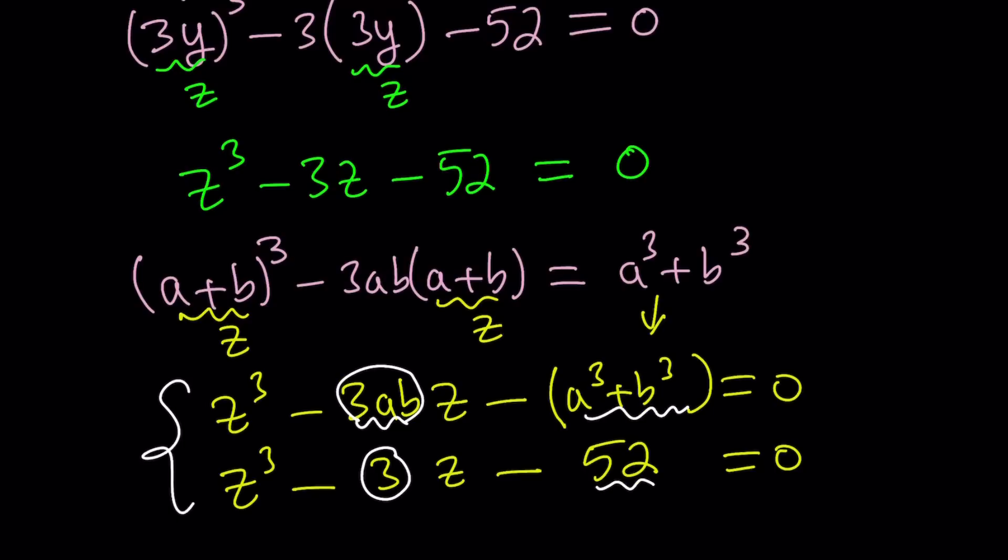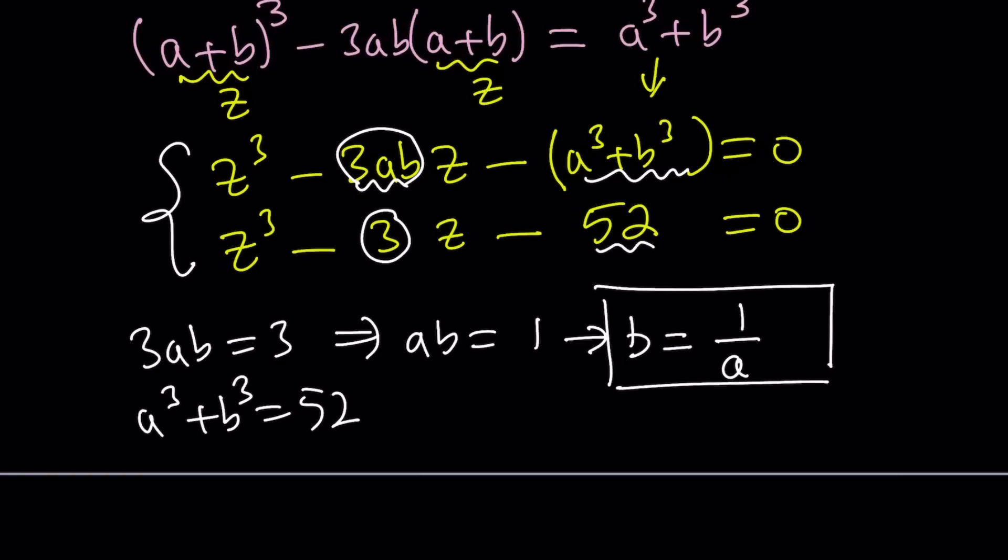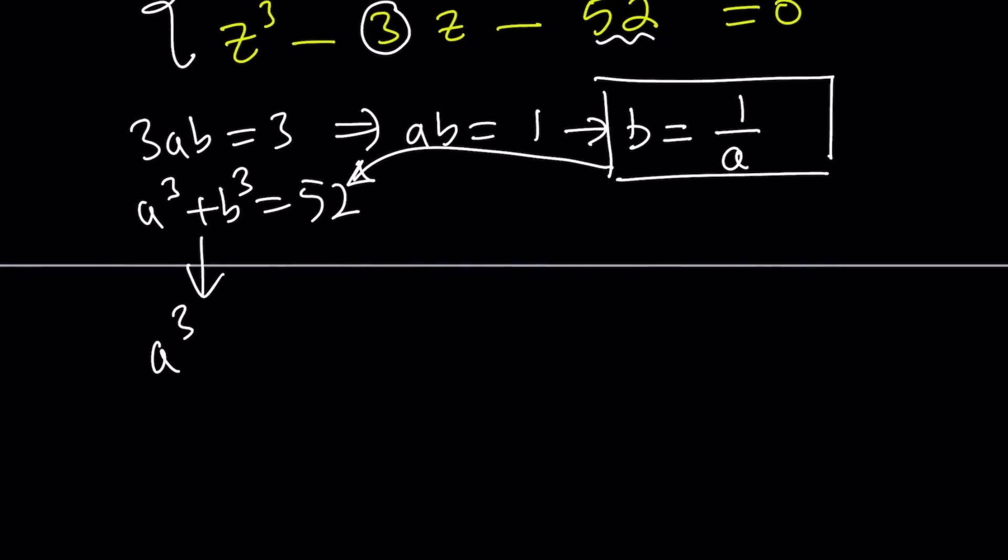So this gives us a system of equations. That's how the cubic formula works. We get 3ab equals 3, which gives us ab equals 1, and a cubed plus b cubed equals 52. So I'm going to work on this a little bit. One more time substitution. From here, I can replace b with 1 over a, and then use it here. Replace b with 1 over a. This gives us a cubed plus 1 over a cubed equals 52. Don't try to guess it because it's hard, it's not an integer. So let's turn this into a nicer equation.